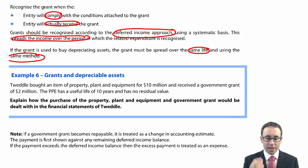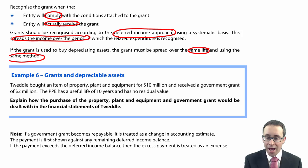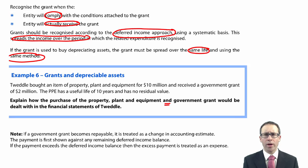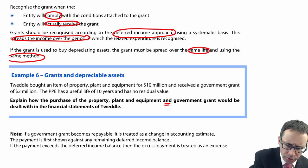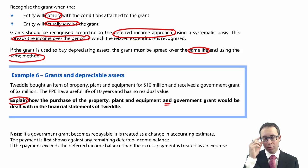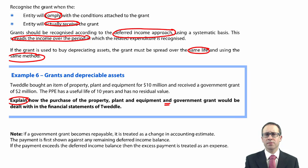So it says in question six: explain how the purchase of property, plant and equipment and the government grant will be dealt with in the financial statements of TWEDL. It does say to explain, so we're bringing in more of the discursive aspect that you see within P2. It asks us to talk about the PPE and the government grant. I'm not saying that you would lay it out as such, but this is just to help us generate the ideas.